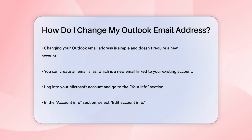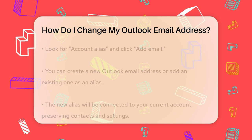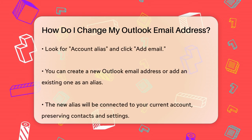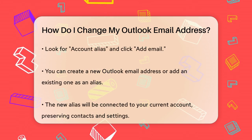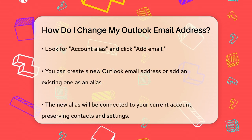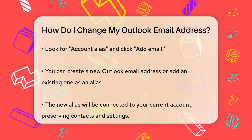First, you need to create what's called an email alias. An alias is essentially a new email address that links to your existing account. To do this, log into your Microsoft account and navigate to the Your Info section at the top of the page. From there, go down to the Account Info section and select Edit Account Info on the right side.